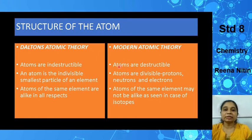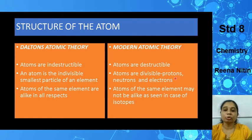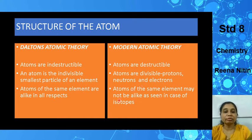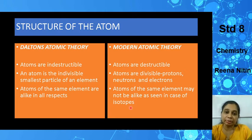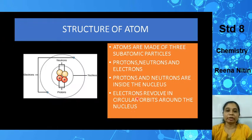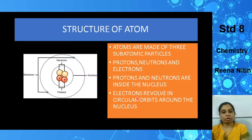The modern atomic theory says that atoms are destructible — you can divide them further into protons, neutrons, and electrons. Atoms of the same element may not be alike, as seen in the case of isotopes. Isotopes are of the same element — for example, hydrogen has isotopes — they have the same atomic number but a different mass number. Those were the key differences between Dalton's atomic theory and the modern atomic theory.